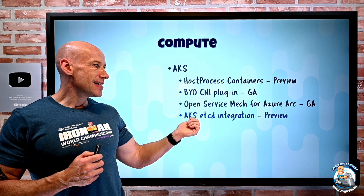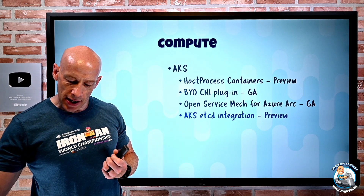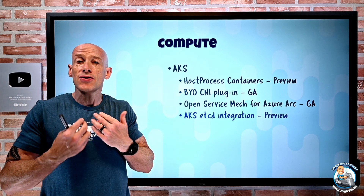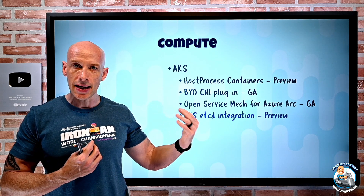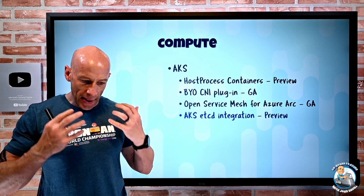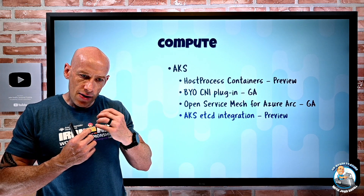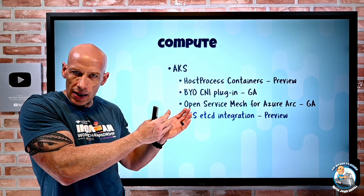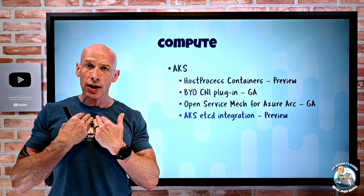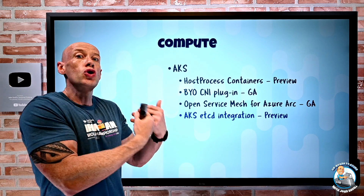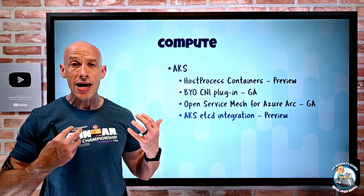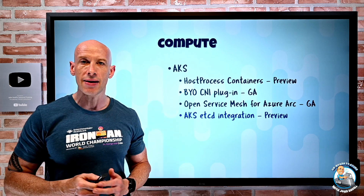AKS etcd integrations. etcd is the database for Kubernetes — it's managed, but secrets get stored in that etcd database. What this now brings is a KMS plugin for Azure Key Vault, so the key stored in Azure Key Vault gets used to encrypt the etcd database and the secrets within it — basically bringing your own key for the encryption of that etcd database.